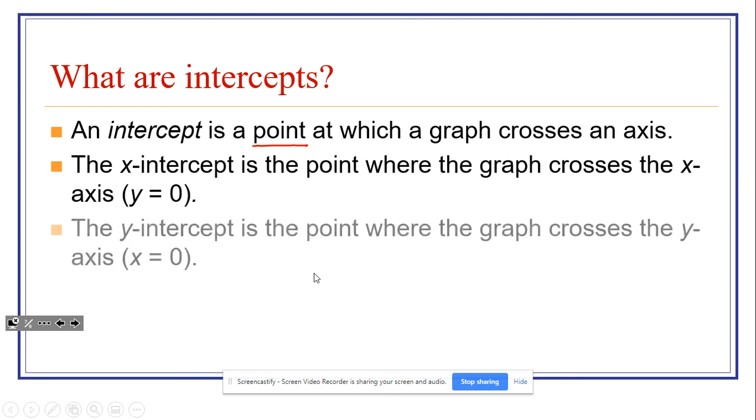Likewise, the Y-intercept is the point where the graph crosses the Y-axis. There is only one Y-intercept in any function. And when we have a situation where we're looking for the Y-intercept, the value of X is always going to be zero.